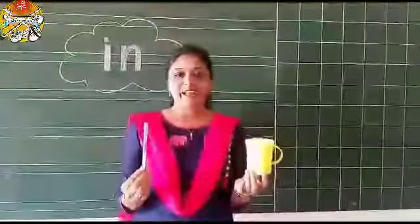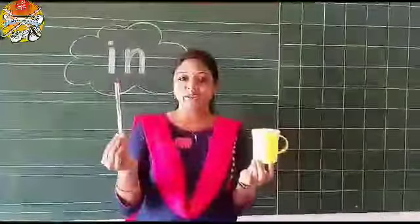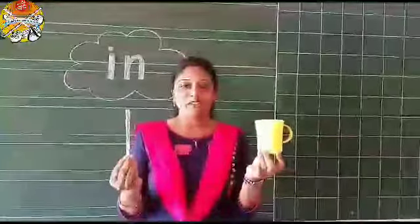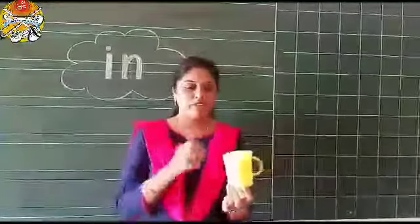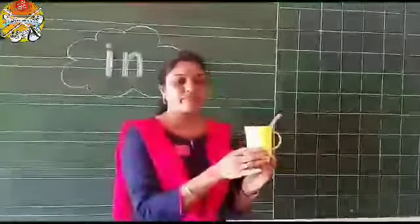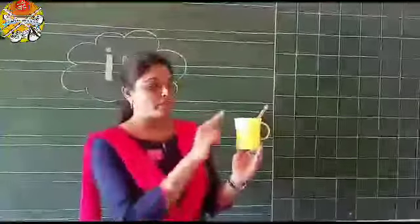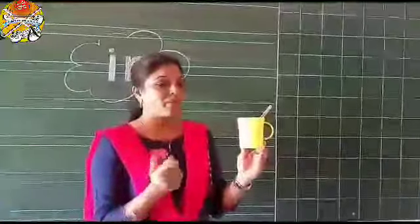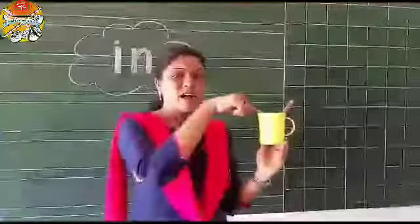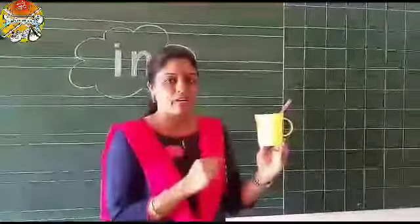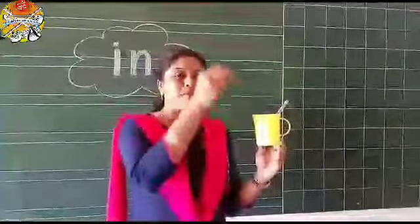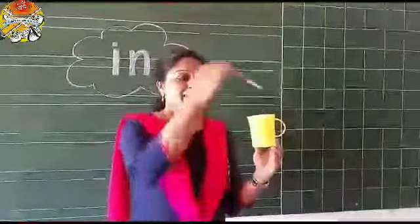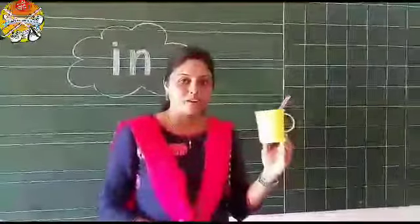Now children, here I have two objects. One is pen and another one is mug. Now look here. Where is the pen? Pen kaha par hai? Pen is in a mug. Pen mug ke anndar hai. So pen is in a mug.